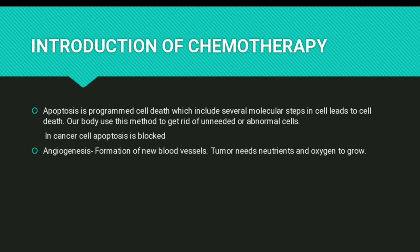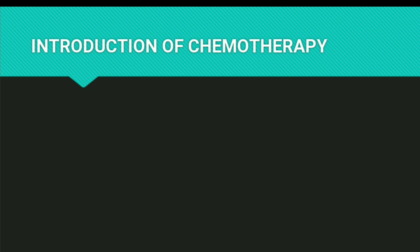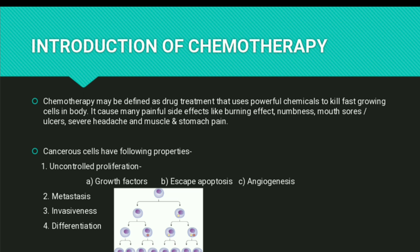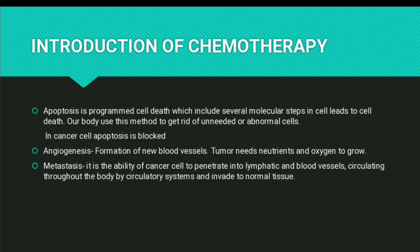Angiogenesis is simply the formation of new blood vessels. Tumors need nutrition and oxygen to grow, and blood vessels provide these to the tumor. Angiogenesis is therefore also a key property of cancer cells. Another important property is metastasis.